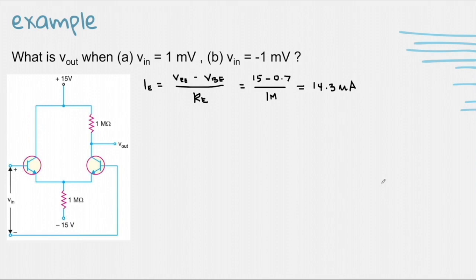Now, let's solve for the IE1 and IE2. That's the IE divided by 2. So that's 7.15 microamperes.